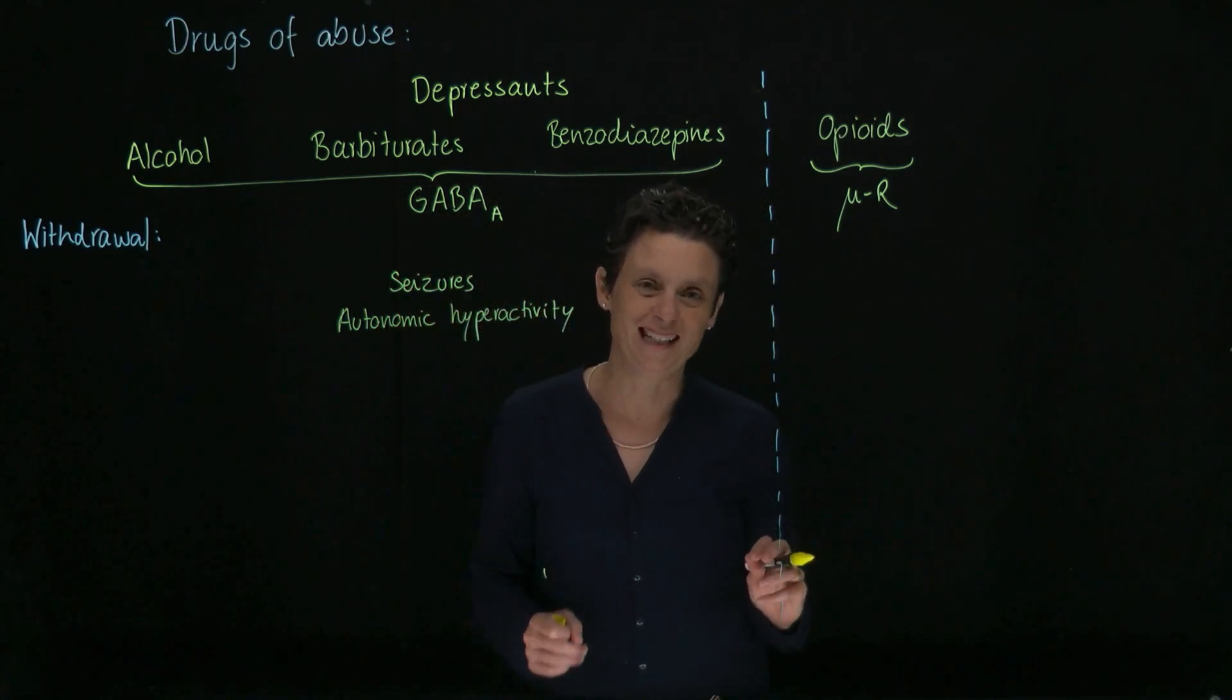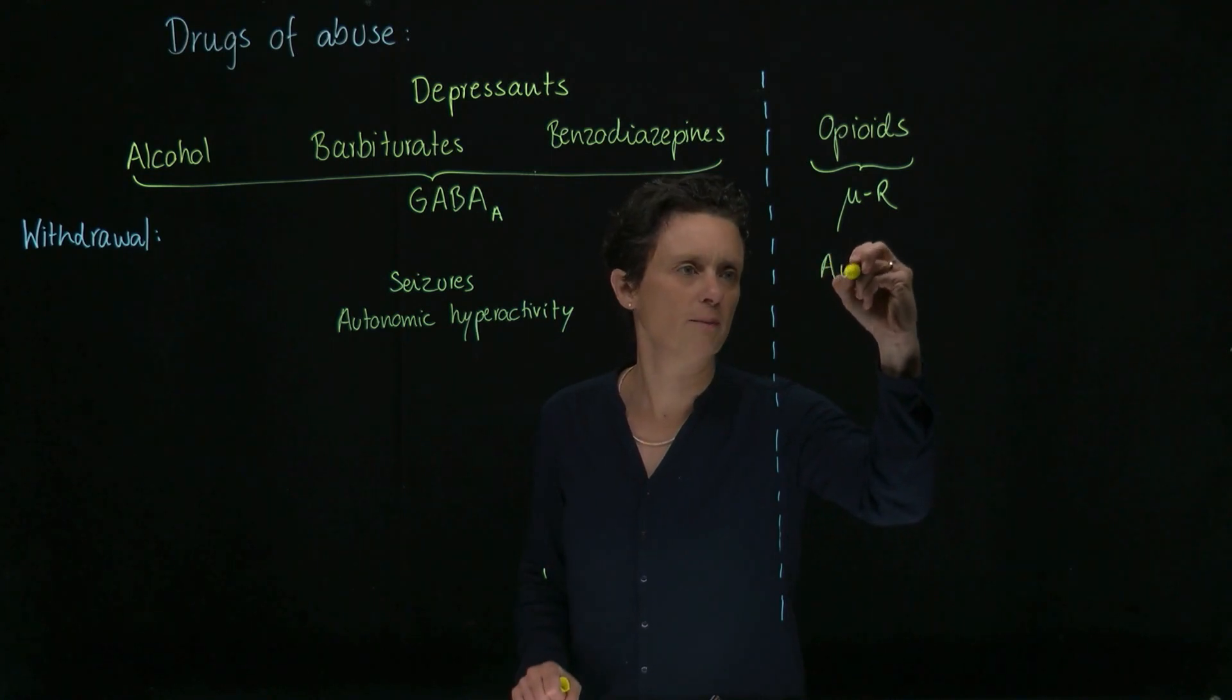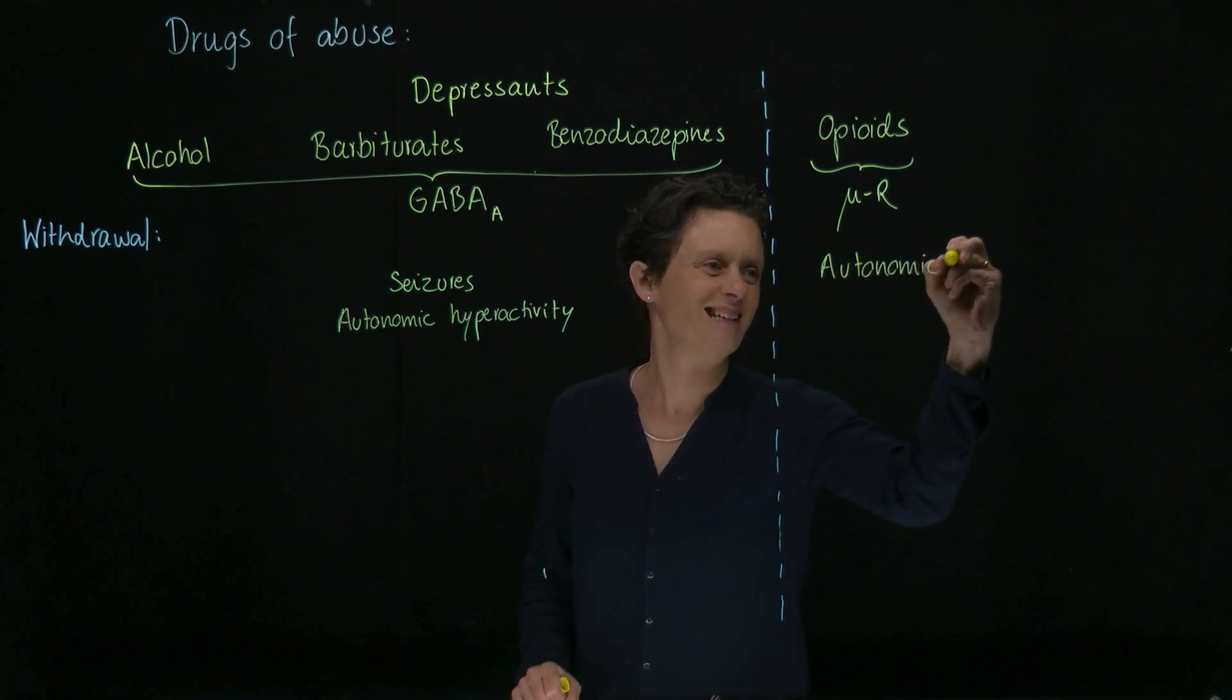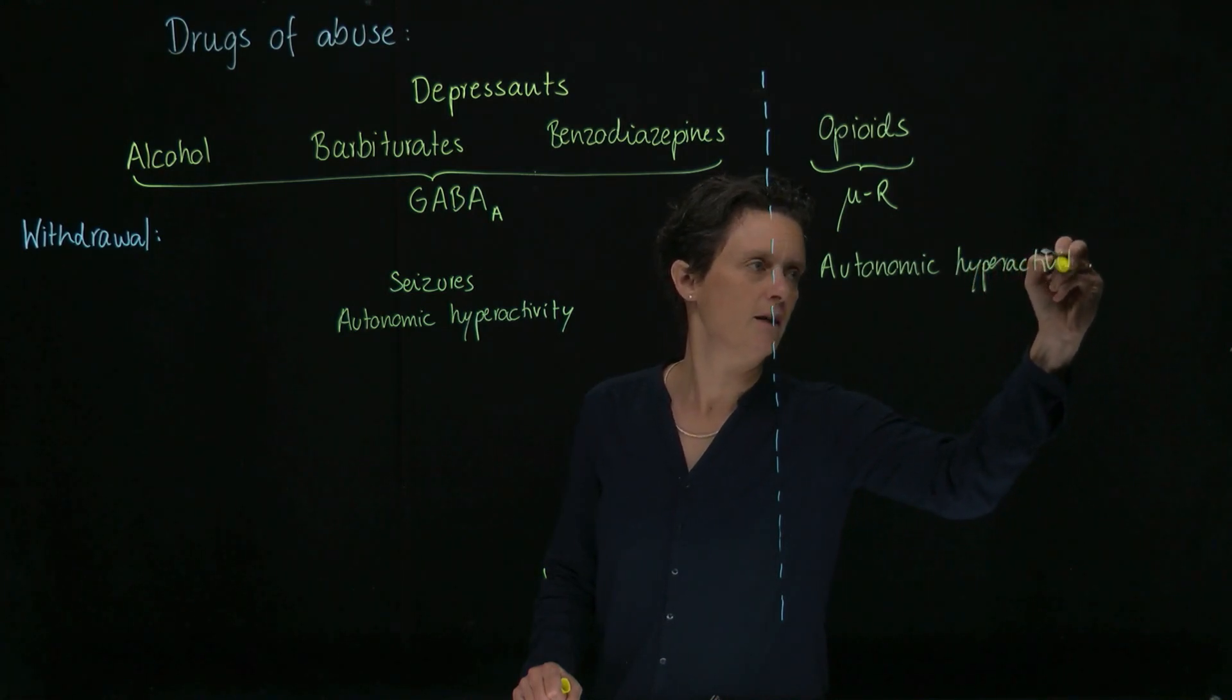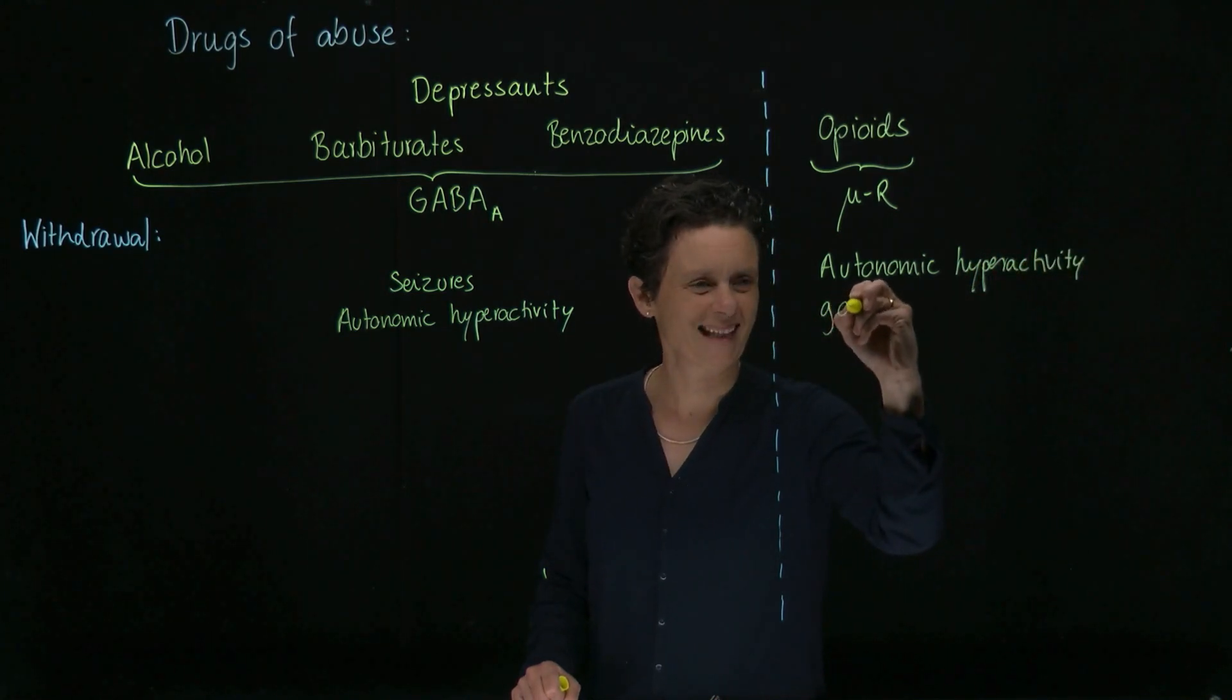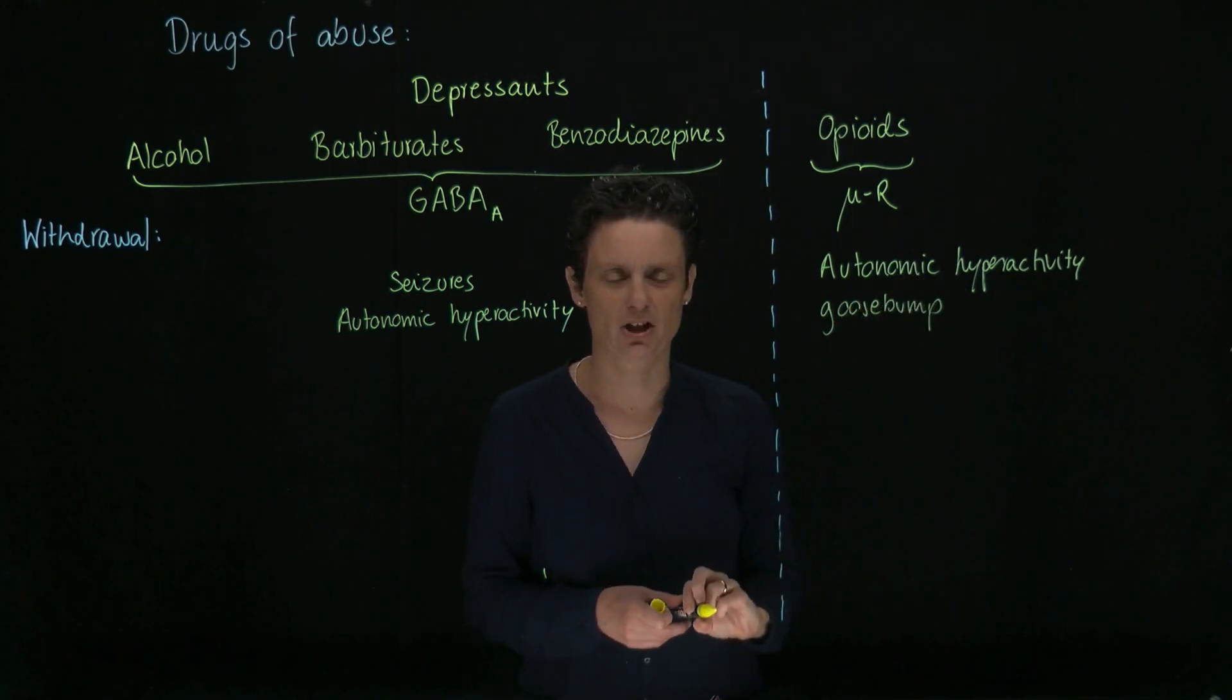For the opiates, what is characteristic here? As part of the autonomic hyperactivity that you're also going to see, you're going to have goosebumps. That's part of autonomic nervous system overreaction.